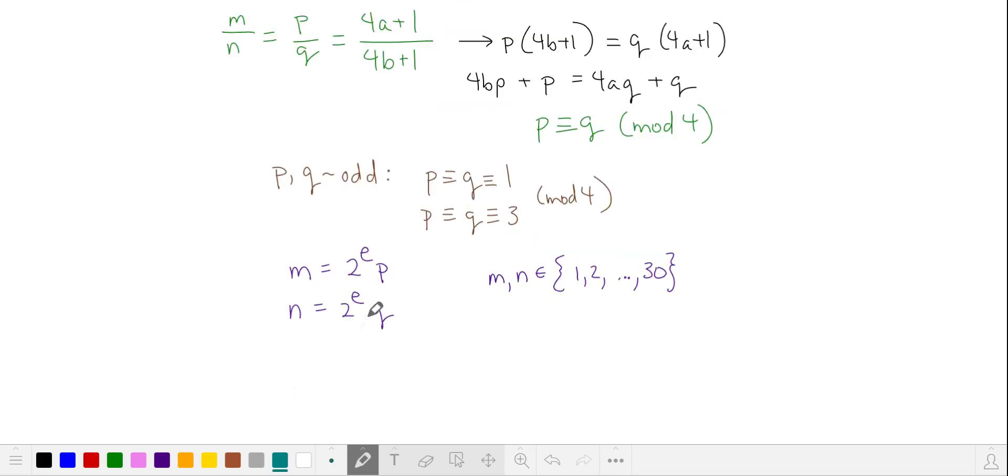They must have the same power of 2 in their prime factorization, and then the remaining odd factors are both equivalent to either 1 or 3 in mod 4, and we're choosing them from the numbers 1 to 30.